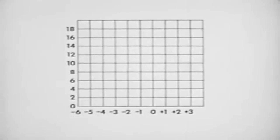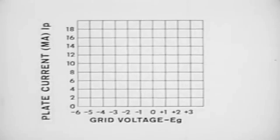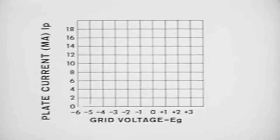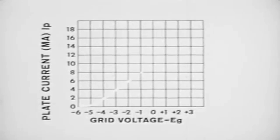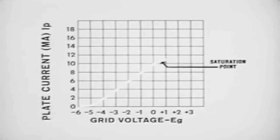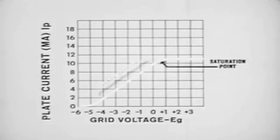The relationship between plate current, or IP measured in milliamperes, and grid voltage, or EG, can be plotted on a graph. As a line is drawn from point to point, we derive a characteristic plate current curve. Note that we do not get a straight line, but a gradual movement upward until a point of saturation is reached. That portion of the curve which is straight is called the linear portion.